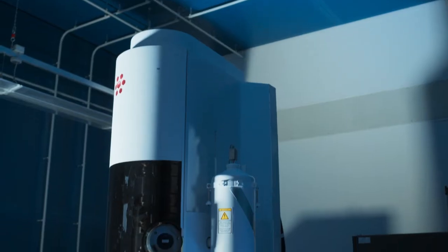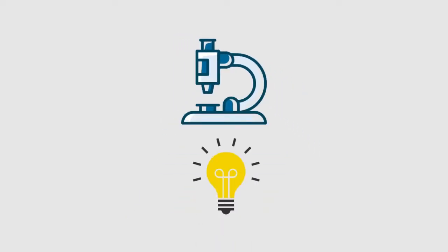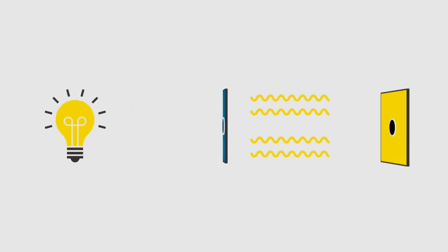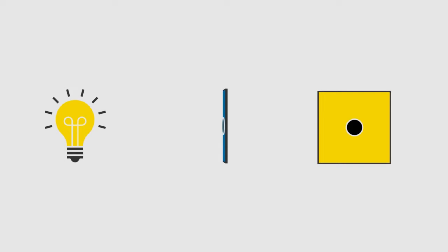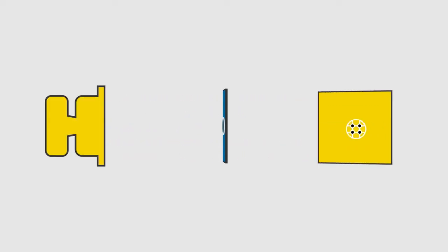There are various tools and techniques available to help us look at the materials. For instance, now we have electron microscopes. Traditionally we were using light microscopes, but the newer and cooler microscopes use electrons, and this allows us to resolve much smaller features.